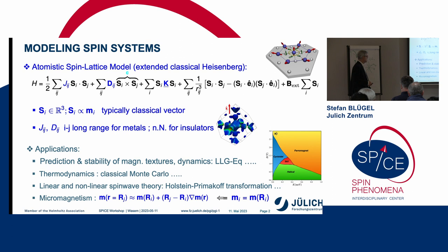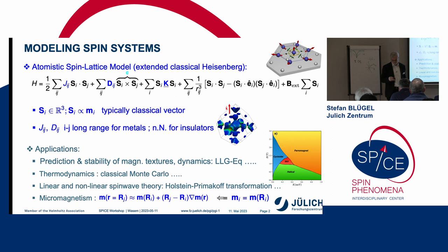And you have some parameters, and the parameters can be long-range if you have a metal with a complicated Fermi surface, or short-range if you have an insulator. And typically, you like these models because you want to predict the magnetic structure, calculate stability of magnetic textures, study dynamics and thermodynamics. You want to do classical Monte Carlo, sometimes linear spin wave theory, Holstein-Primakoff transformation. It's a starting point for micromagnetic models.